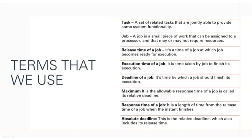Next, some terms we use in RTOS. First: a task — a set of related tasks jointly able to provide some system functionality. Release time of a job is the time at which the job becomes ready for execution. Execution time is the time taken for execution of that particular task or job. Deadline of a job is the time by which the job must be finished. Maximum allowable response time is the maximum deadline allowable. Response time is the time with which the system gives you the required response. Absolute deadline is the relative deadline which also includes its release time.